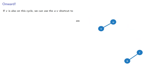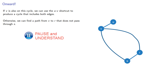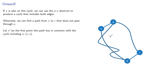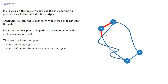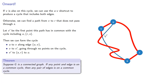Otherwise, we can find a path from v to r that does not pass through s — because any point and any edge must be on a common cycle, we can just use the part of the cycle that does not include s. So there's a cycle that contains u and the edge rs. We don't know what this cycle looks like, and it might cross this path. Let v' be the first point this path has in common with the cycle including u and the edge rs. Then we can form the cycle from u to v along the edge, from v to v' going through no points on the cycle, and from v' to the edge sr back home to u. And so suppose g is a connected graph: if any point and edge is on a common cycle, then any pair of edges is also on a common cycle.